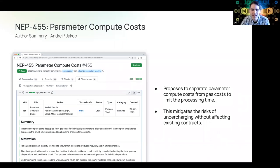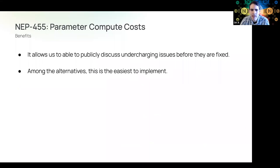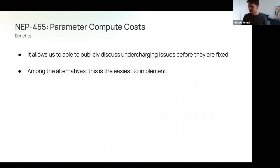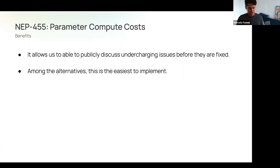In terms of implementation: each of the roughly one hundred gas parameters gets duplicated — a gas cost number and a compute cost number, which are the same by default. We can then selectively change specific compute costs when needed. This allows quick fixes for undercharging issues and lets flat storage ship without fear of breaking developer contracts. The full details of the solution space considered are written out in the NEP itself.